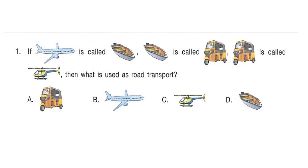Question number 1. If helicopter is called boat, boat is called auto rickshaw, and auto rickshaw is called helicopter, then what is used as road transport? We know that auto rickshaw is used as road transport. But in this question, auto rickshaw is called helicopter. So our answer is option C — helicopter.